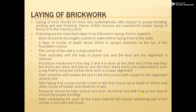Verticality is checked with the help of plumb bob and the level, and the alignment is checked. The procedure mentioned in steps three and four is done at the other end of the wall. Then the bricks are taken and tied by the line dhuri. These are suspended in such a way that it brings the further brickwork into proper alignment. When we construct both corners of the wall, we put one line dhuri above those corners and then place the remaining courses so that alignment and verticality can be properly achieved.